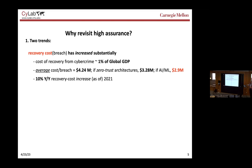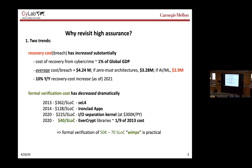If you apply these AI methods and tools, you will detect breaches earlier, meaning shorter time to detection and consequently less damage. As of 2021, there is a 10 percent year-over-year cost increase in recovery from breaches — that's a significant growth trend. The second trend is that the cost of formal verification has decreased dramatically.